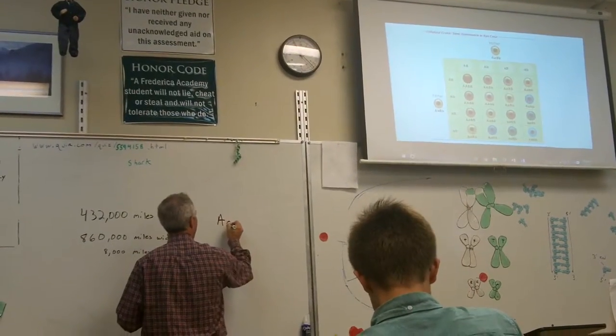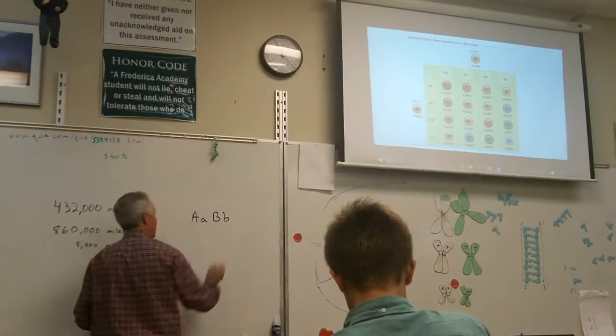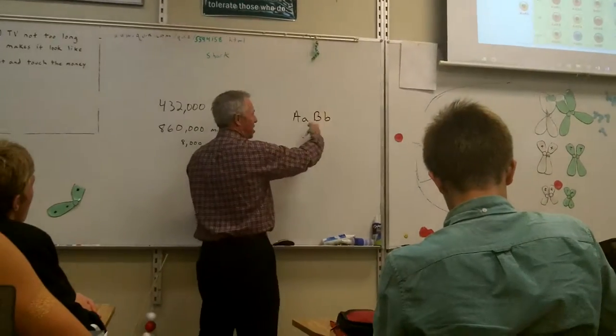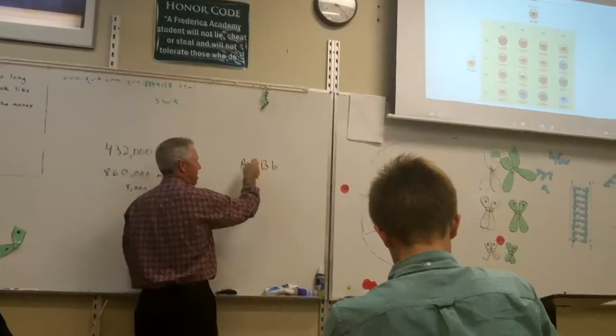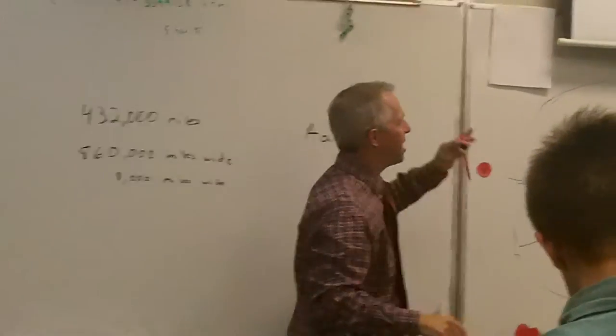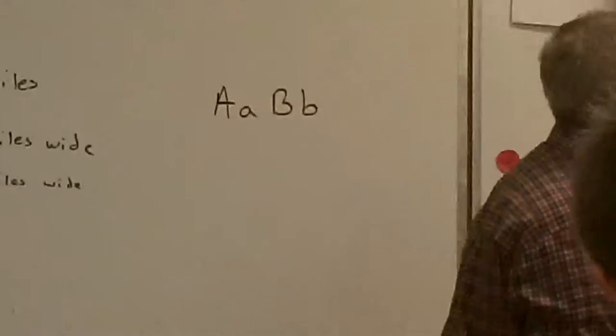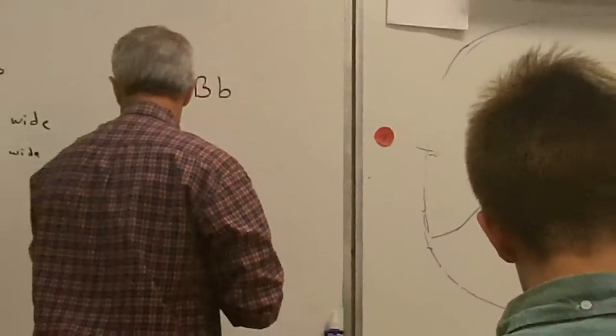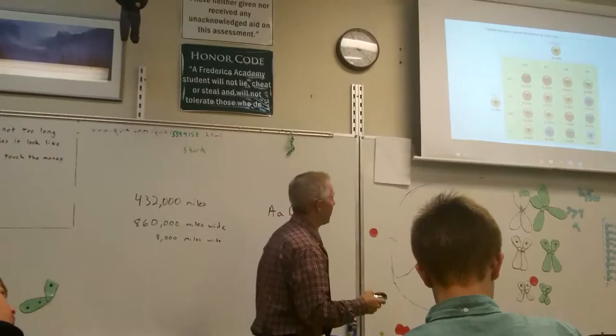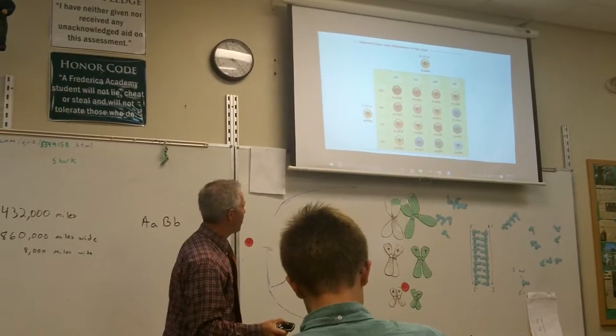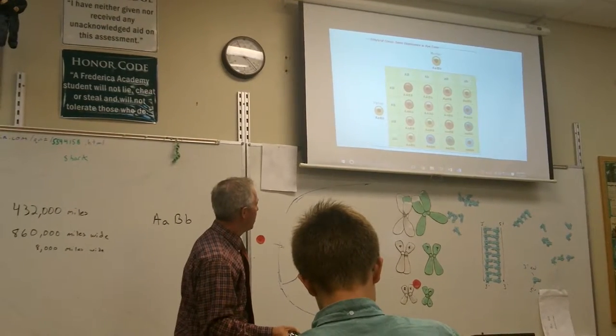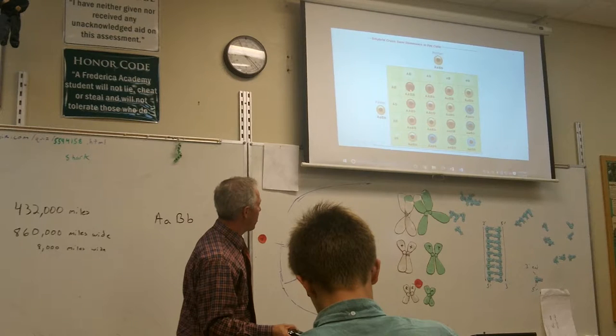It's A and B, and you can have any combination of capital A's and capital B's and lowercase a's and lowercase b's, and that shows you all the different eye colors that result from those two genes. As a basic rule of thumb, the more capital letters you have, the darker the eye color. So if you have all capital letters, you have dark eyes.